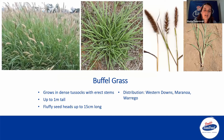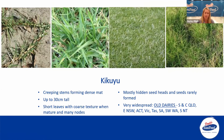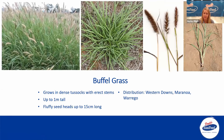Buffel grass grows in little tufts with a fluffy seed head up to 15 centimeters long. It's distributed around the Western Downs, Maranoa, and Warrego regions. It's quite high in oxalate, but not to the same level as setaria. With buffel grass, most people in the western regions know it's there — it seeds quite often throughout the year so it's easy to spot, and it's usually planted for cattle pasture. Horses are often on it all the time.